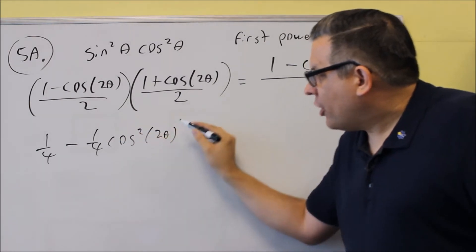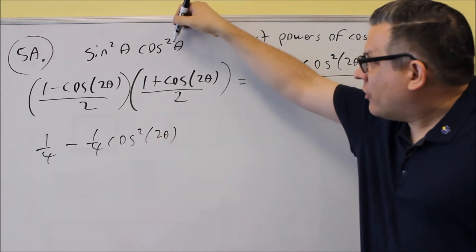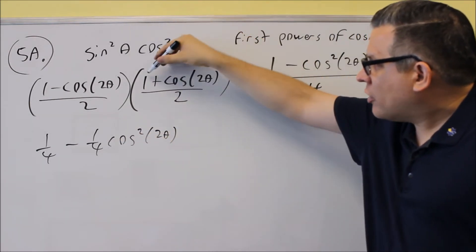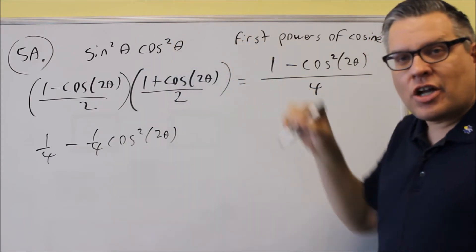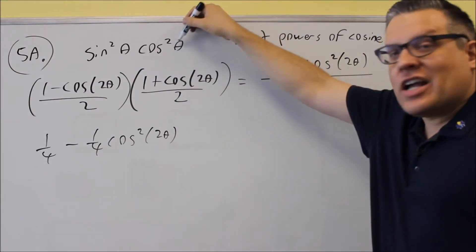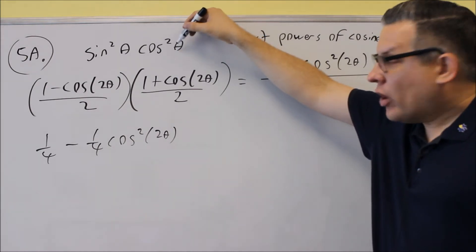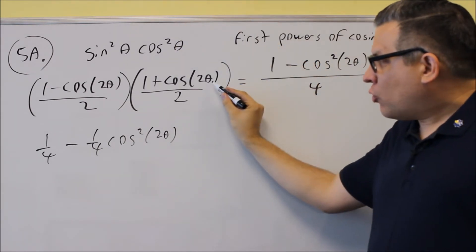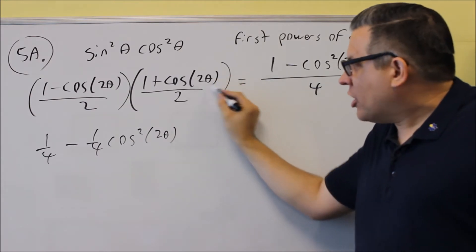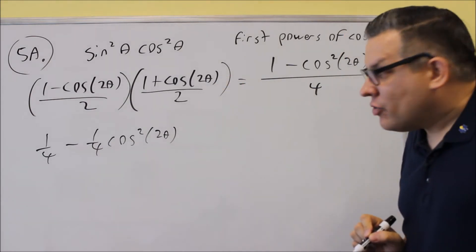This one here, I'm going to put in another power reducing formula. Notice when I use cosine squared, I end up with a 1 plus cosine, but look what happens inside for the theta. Now the original theta was just a 1 theta and it doubled when I used the power reducing formula and it doubled to 2 theta.